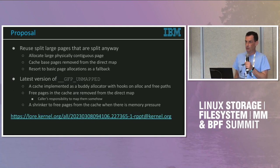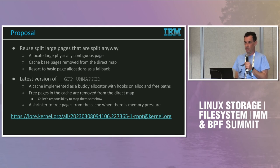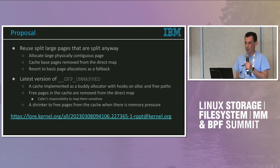Setting attributes in the direct map alias causes a split of large pages in the direct map, and allegedly it reduces system performance. A while ago I sent a patch to create yet another version of caching of 2MB pages to reduce direct map fragmentation, so that once we need to allocate a page for something that needs different protections, we allocate 2MB pages at one go and then distribute those pages between users.